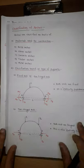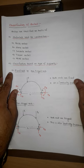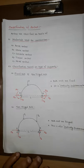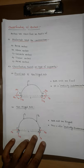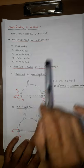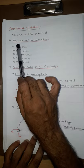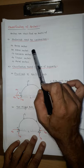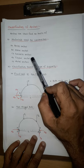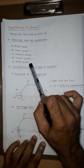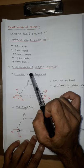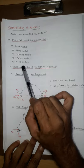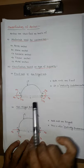Now let us look at how arches are classified. There are mainly five factors for classification. The first factor is depending upon the materials used for construction: brick arches, stone arches, concrete arches, timber arches, and metal arches.